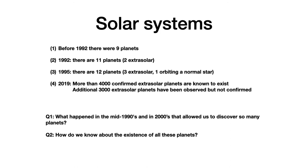Now, let's get back to discussing planets. Before 1992, humankind knew about nine planets. In 1992, the number of known planets increased to 11, after the discovery of two planets outside of our solar system. In 1995, one more planet was discovered outside our solar system, bringing the total number of planets to 12. In 2019, there are more than 4,000 confirmed extrasolar planets, and also about 3,000 extrasolar planets that have been observed but not confirmed. Which brings us to the question, what happened in mid-90s and early 2000s that allowed us to discover so many planets? And how do we know about the existence of all these planets?